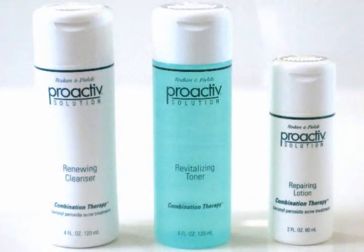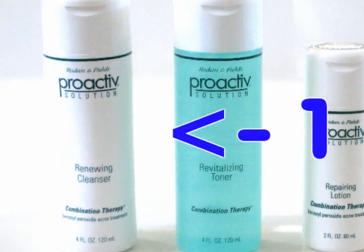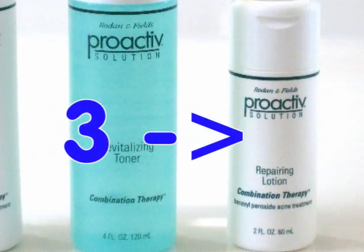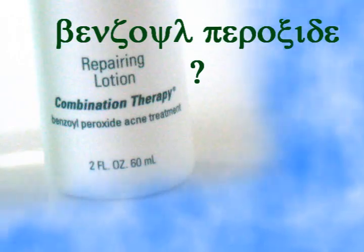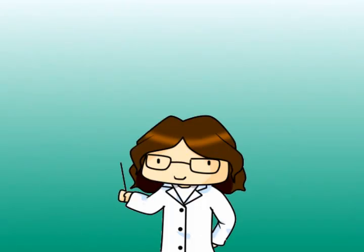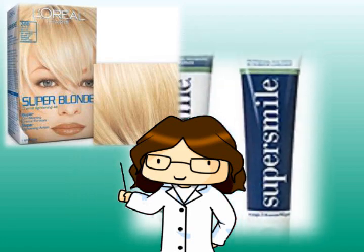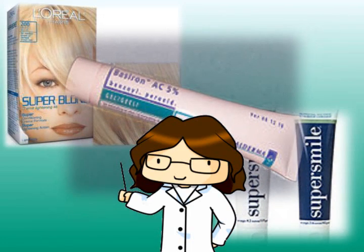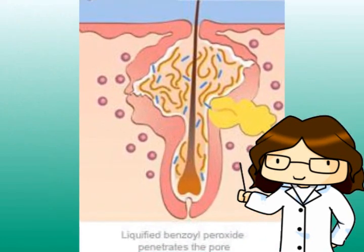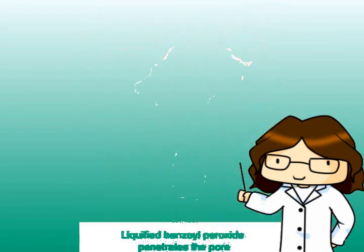Benzoyl peroxide is the active ingredient for Proactiv steps one and three, but what is it? Benzoyl peroxide can be found in hair coloring and teeth whitening products, but it's mostly used to treat acne. It goes under the surface of the skin where all the oil builds up to cause acne and dries it up from the inside out.